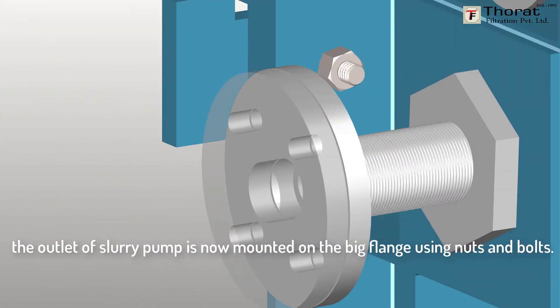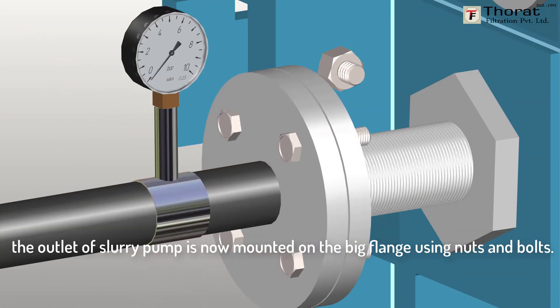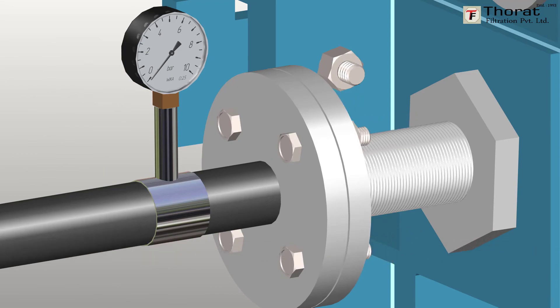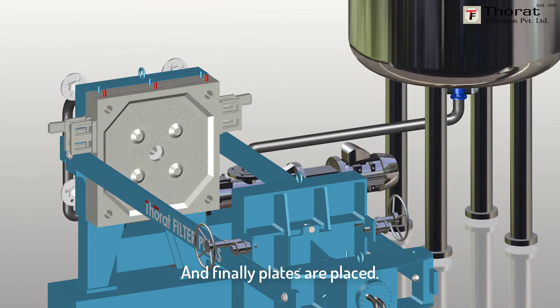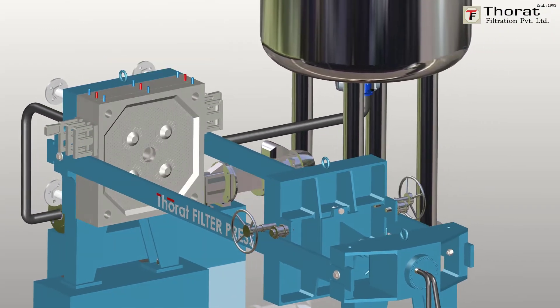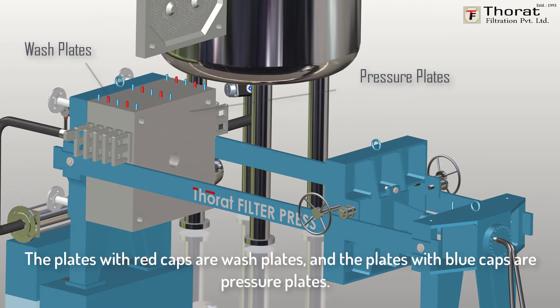The outlet of slurry pump is now mounted on the big flange using nuts and bolts. Finally, plates are placed. The plates with red caps are wash plates and the plates with blue caps are pressure plates.